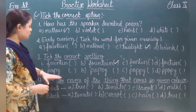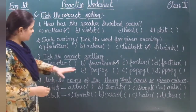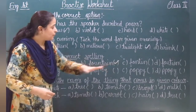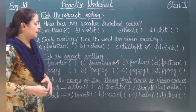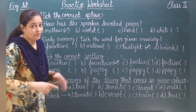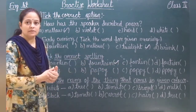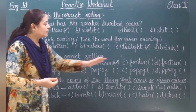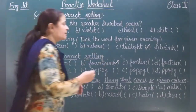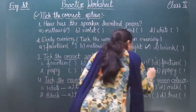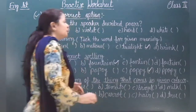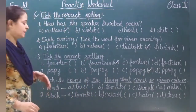Next comes poppy. The options are P-O-P-Y, P-O-P-O-Y, P-O-P-P-Y, and P-P-O-P-Y. The correct spelling of poppy is P-O-P-P-Y.